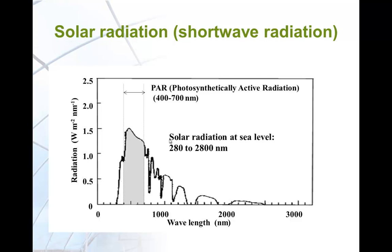This chart shows the solar radiation spectrum, generally ranging from around 280 nanometers to 2800 nanometers. The radiation from 400 to 700 nanometers, which is the peak of solar radiation, is used for photosynthesis and is therefore called photosynthetically active radiation. The energy absorbed by chloroplasts is essentially turned into heat. Therefore, you can consider all solar radiation from 280 to 2800 nanometers as a thermal source that increases plant temperature.